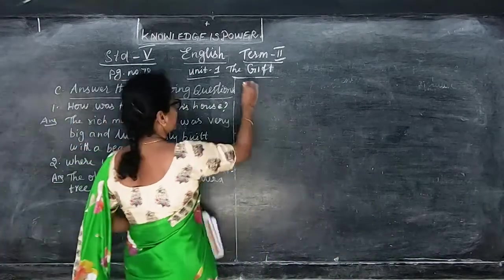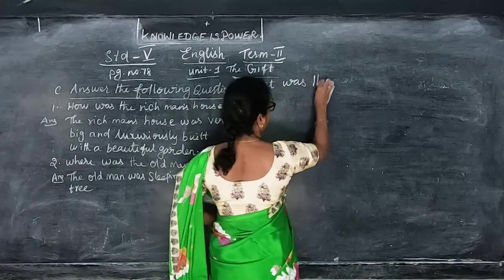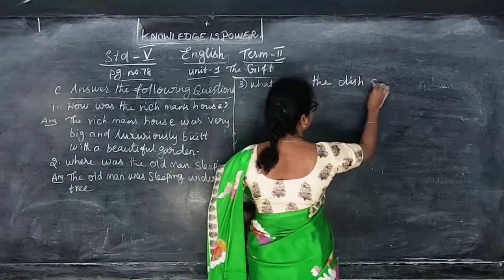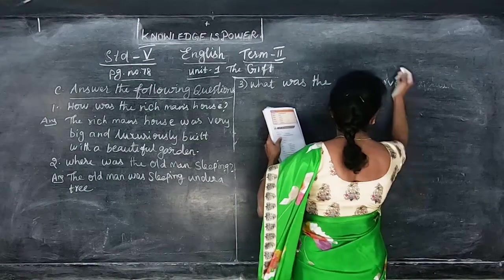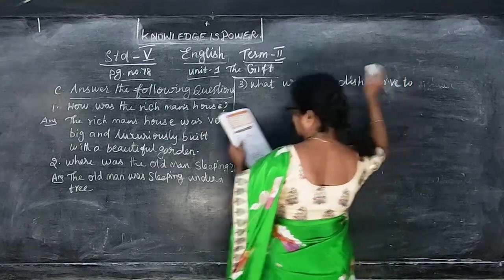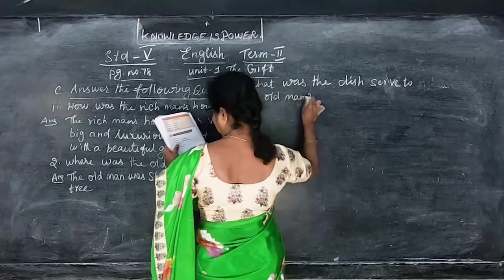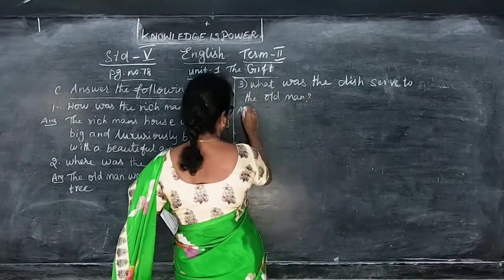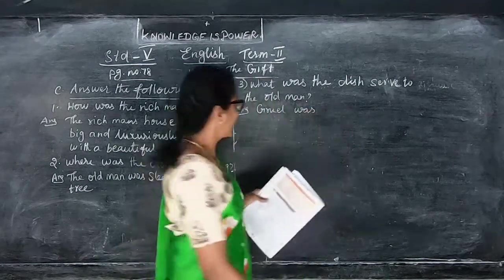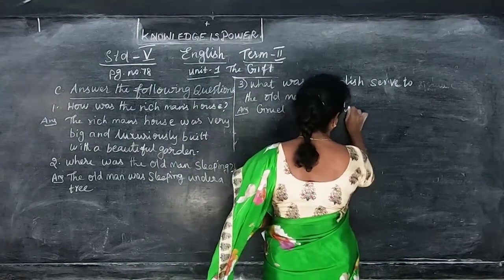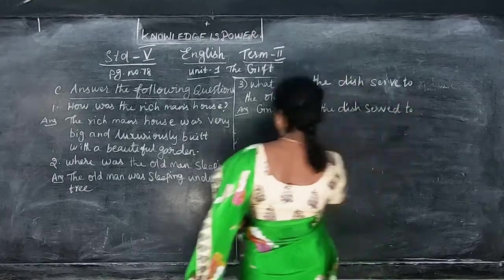What was the dish served to the old man? Gruel was the dish served to the old man.